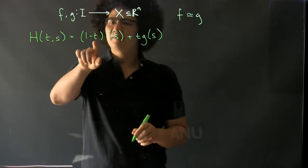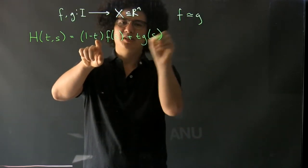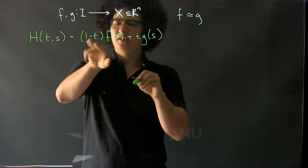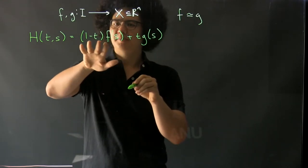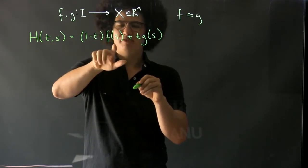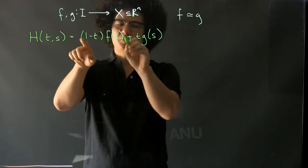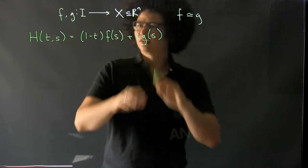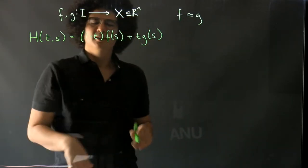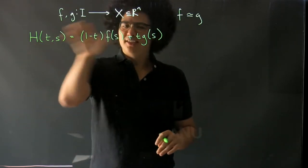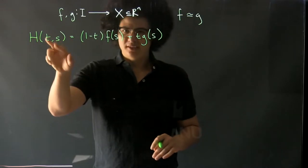So what does this do? At time zero this bit is zero and this bit is f(s). At time one this bit is zero, so this is g(s). So it's a homotopy between these provided this makes sense for all t and for all s.